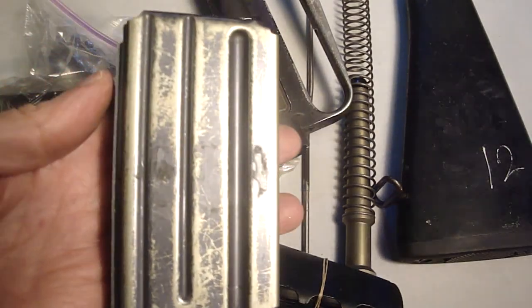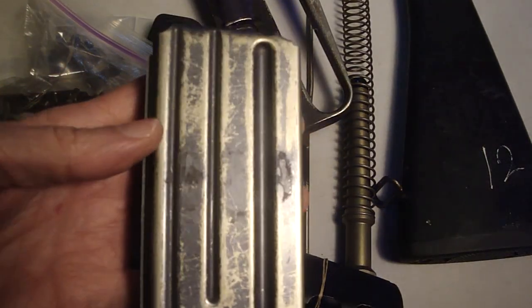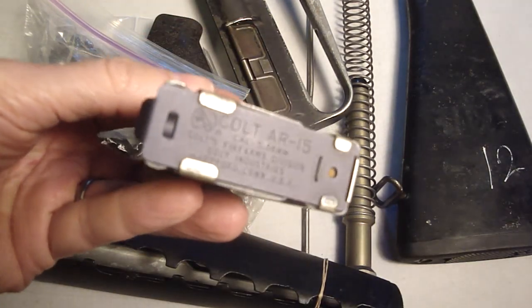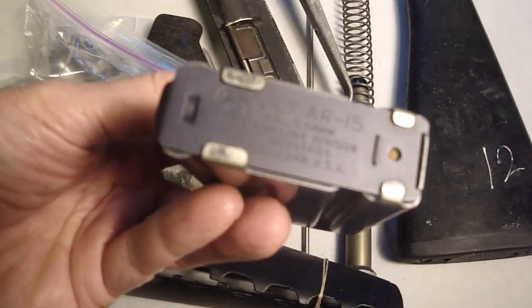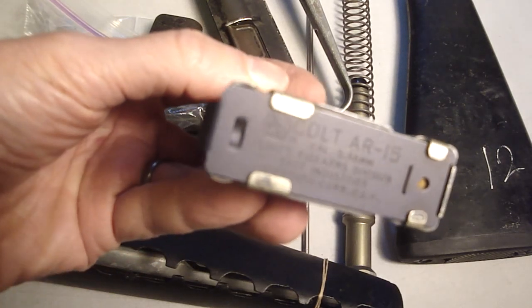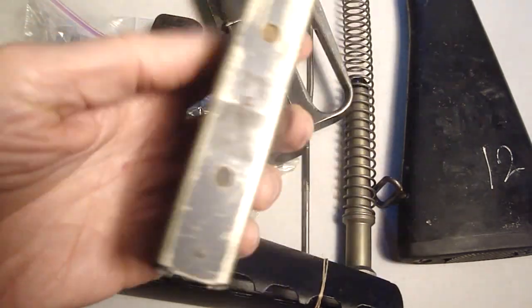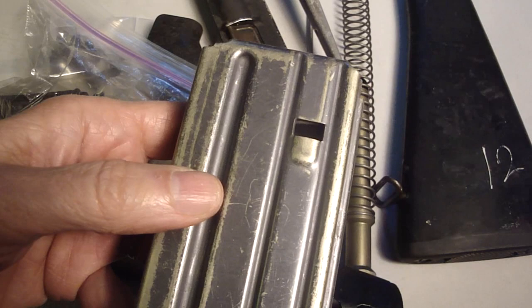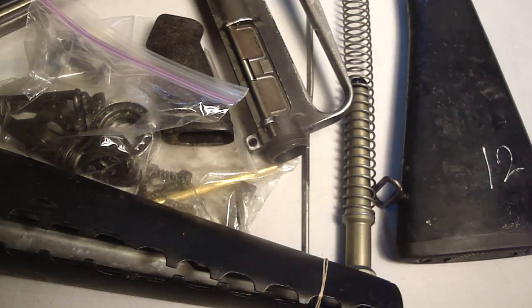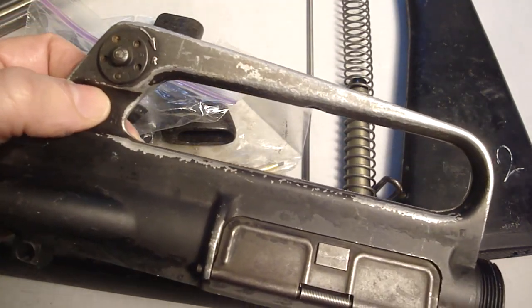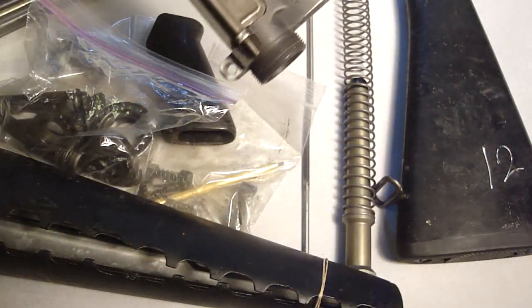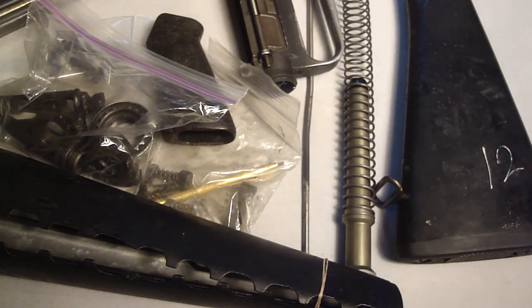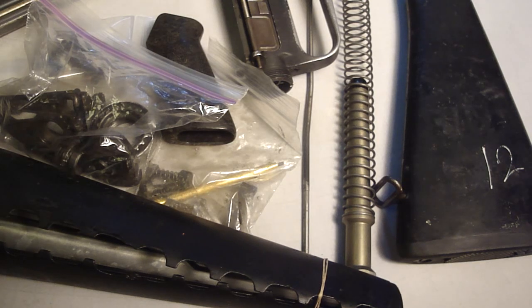I also had on hand this Colt 20-round magazine. This must have been sitting around here for about 20 years or so. I think the wear on this kind of matches the wear of the original M16A1. Even though I'm going to refer to this as an M16A1, it really is an AR-15 because it's going to be semi-automatic, and an M16 connotes select fire, which it's not going to be.